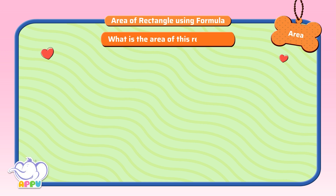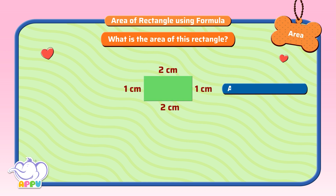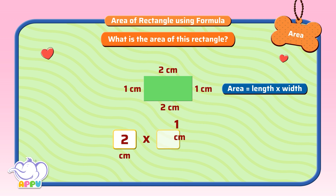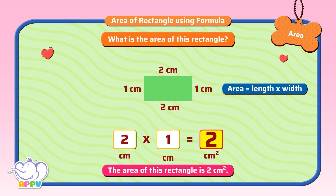What is the area of this rectangle? We know the formula to find the area of a rectangle is length times width. To find the area of a rectangle, multiply the length of the rectangle with its width. Here, the length of the rectangle is 2 cm and its width is 1 cm. So, the area is 2 cm times 1 cm, which is equal to 2 square cm. That's right!